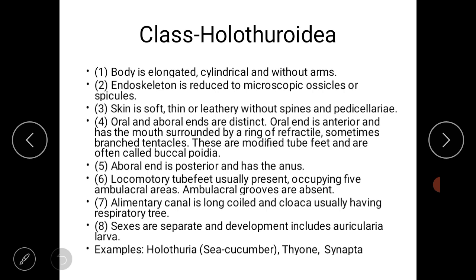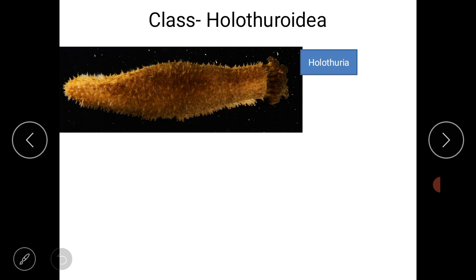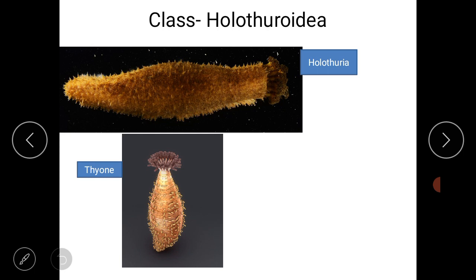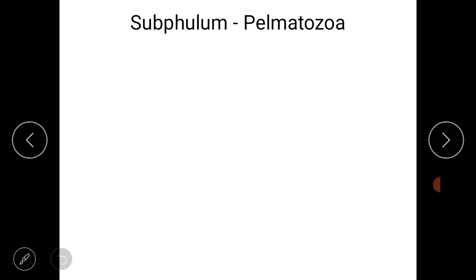Sexes are separate and development includes the auricularia larva. Examples of class Holothuroidea include Holothuria (sea cucumber), Thyone, and Synapta. Observing the examples: this is the sea cucumber (Holothuria), then Thyone, and the third is Synapta. Study the body structure and note these examples from class Holothuroidea.